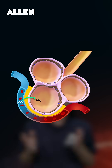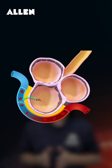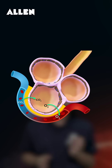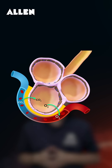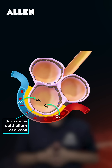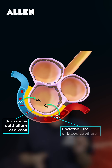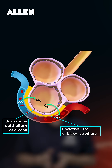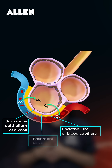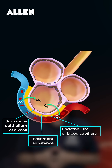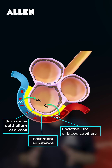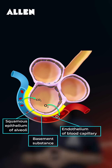Now let's see the thin delicate diffusion membrane that facilitates this exchange. It is made up of three layers: the alveolar epithelium, which is made up of thin squamous cells; the capillary endothelium, lining the blood capillaries; and the basement substance, which is present between these two layers. The total thickness of this layer is much less than a millimeter.